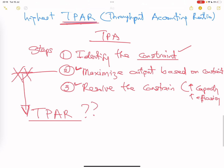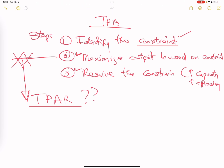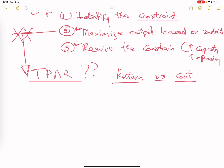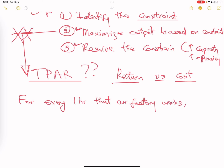What is throughput accounting ratio? It is not complicated — it's actually very straightforward. It is simply comparing return and cost. What it is saying is: for every one hour that our factory works, how much throughput — how much return, how much output, how much benefit — do we get compared to the cost we incur every hour?